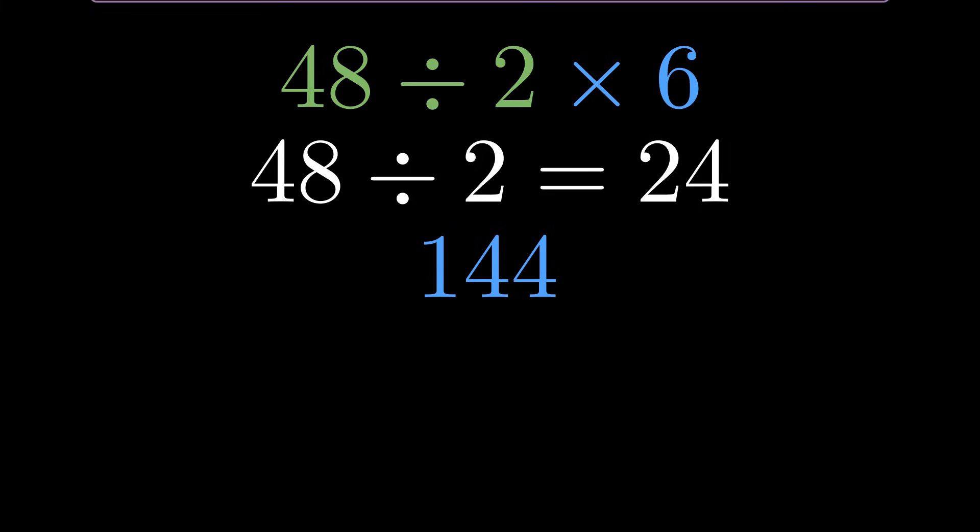And here's the thing. This exact problem has been tested on different calculators and software, and you get different results depending on how they handle implied multiplication. So we have Team 4 and Team 144, both convinced they're right. Both have logical reasoning. What's the real answer?